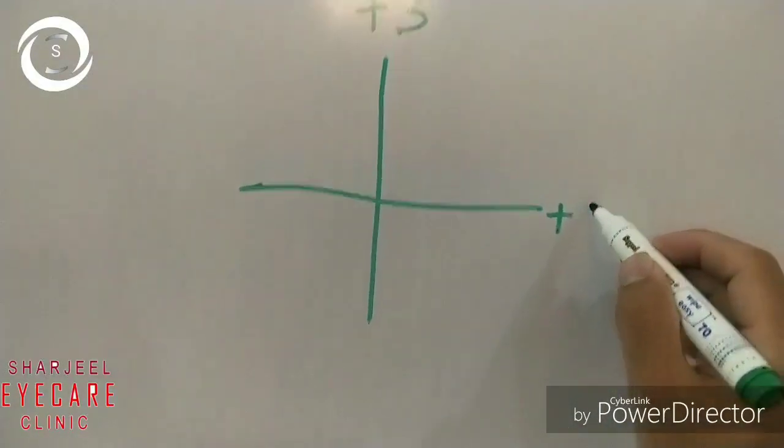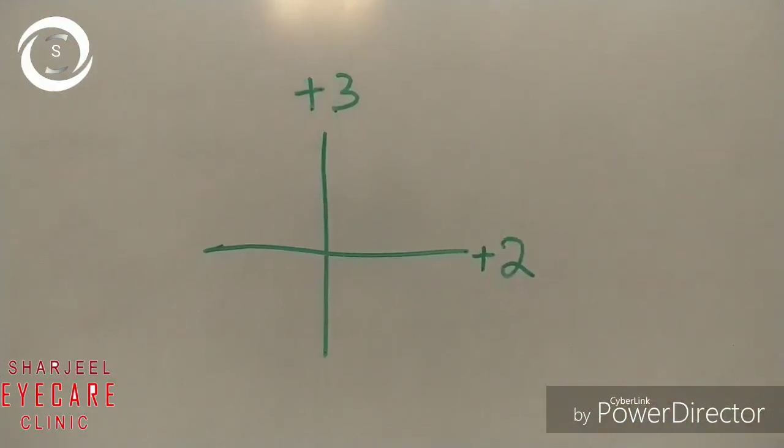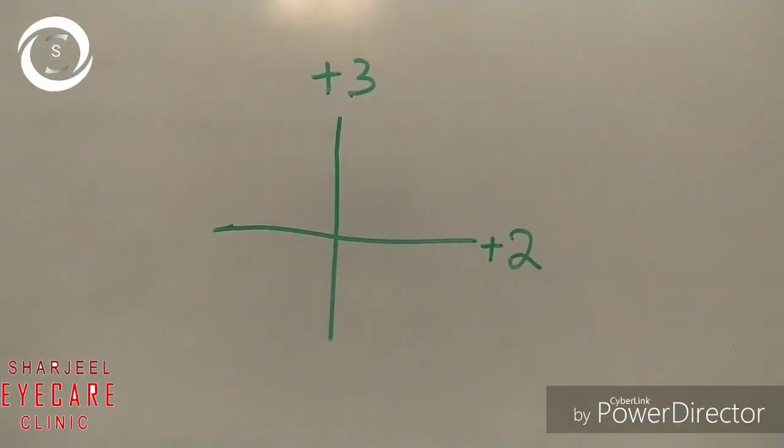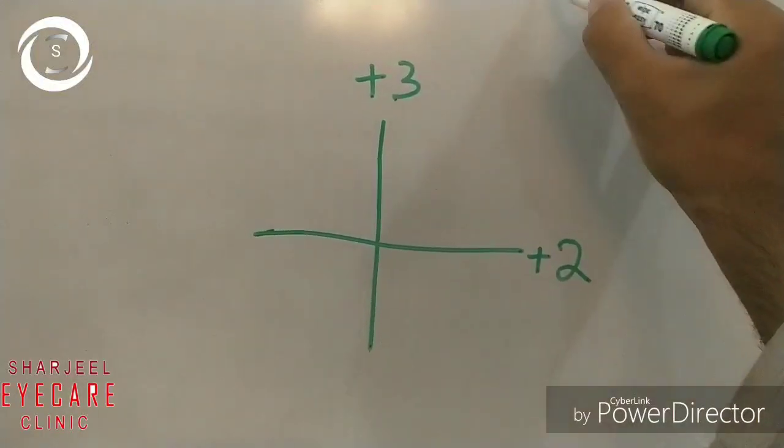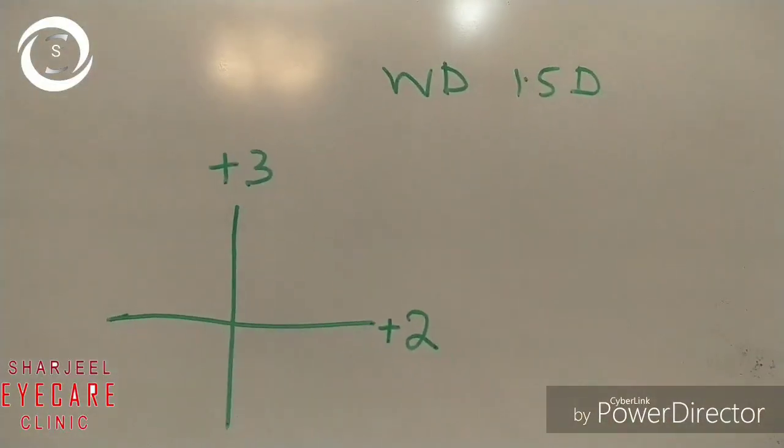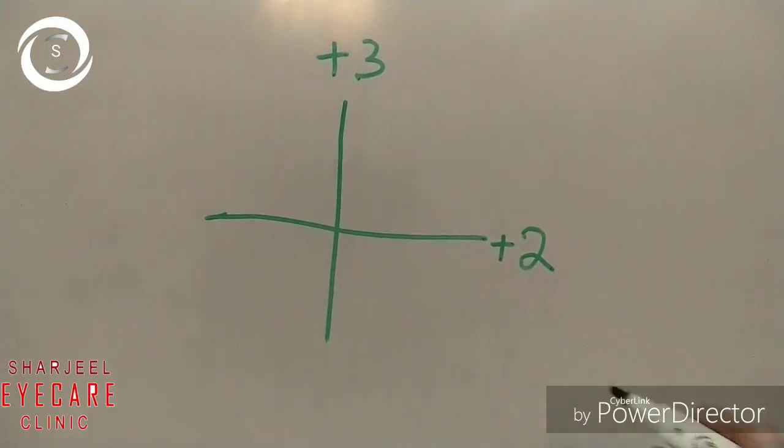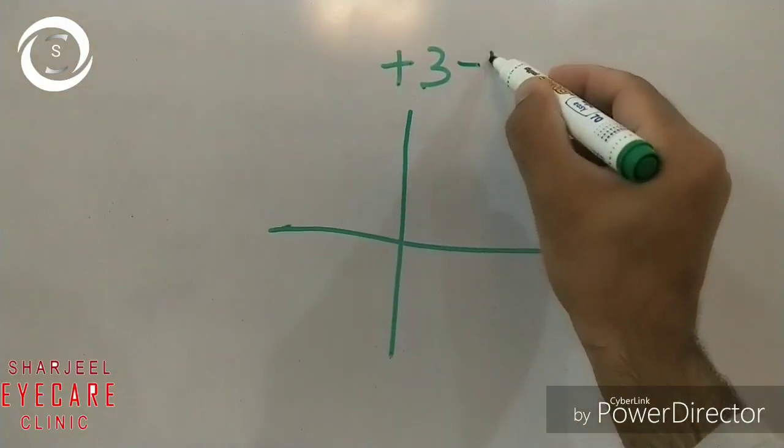Now today we are showing you another method. The same example: plus three neutralization of the vertical meridian and plus two of the horizontal. Now, working distance - if I have done it's about 1.5 diopter, so you can subtract 1.5 at the beginning from both meridians.